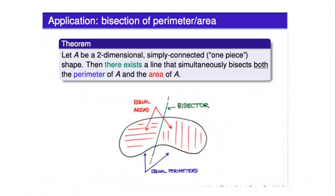The first question was related to the theorem we discussed about the existence of a line that simultaneously bisects both the perimeter and area of a simply connected two-dimensional shape. We proved this using two applications of the Intermediate Value Theorem. I've put the theorem up on the screen so you can have a look at it.